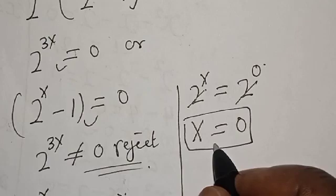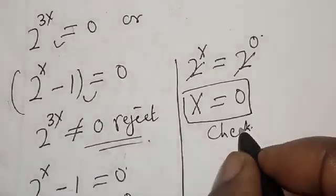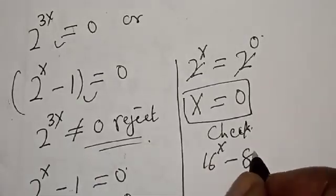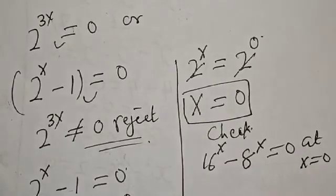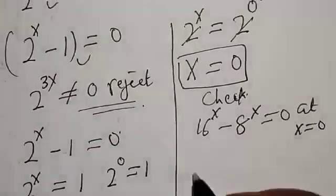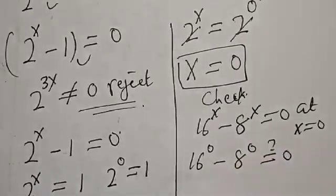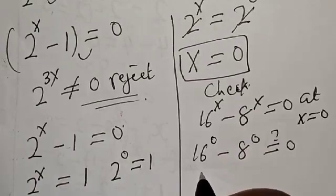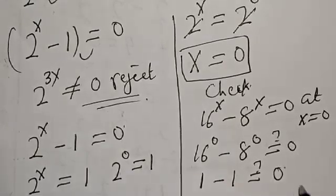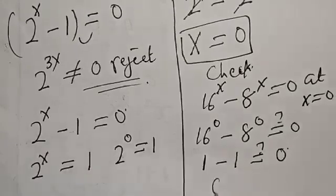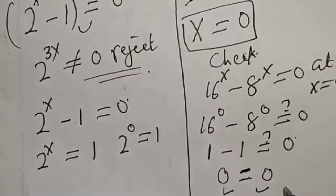Let's check to confirm if our answer is right. We have the given equation: 16 raised to power x minus 8 raised to power x is equal to 0, at x equals 0. Then we have 16 raised to power 0 minus 8 raised to power 0 must equal 0. Since n raised to power 0 is 1, this becomes 1 minus 1, which equals 0. The left hand side equals the right hand side, which satisfies the given equation.